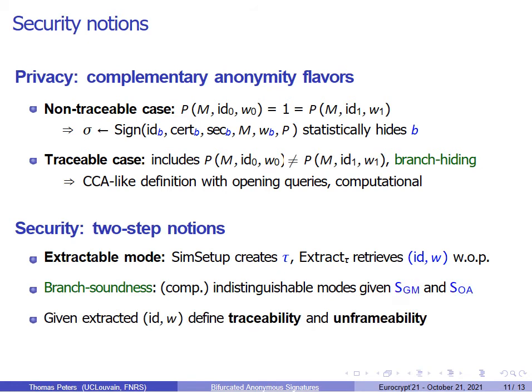Once we can extract identity and witness, it is easy to define the notions of traceability and frameability — for instance, showing that even if the opening authority and the group manager collude, they cannot make an honest signer accountable for a signature he never signed.